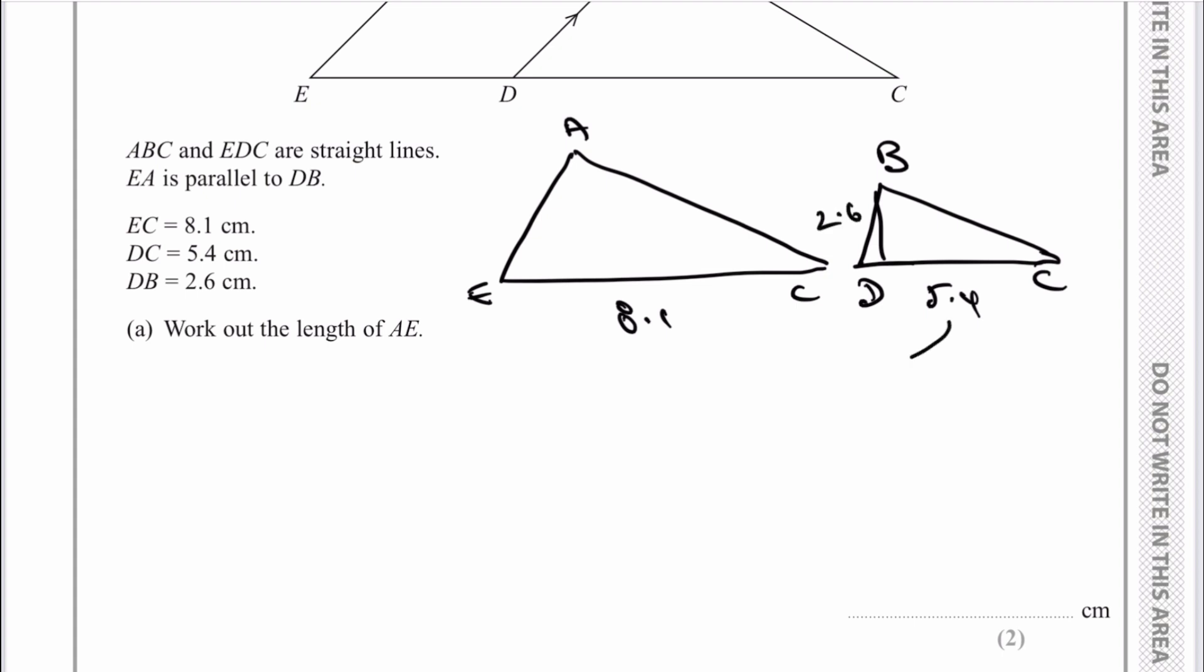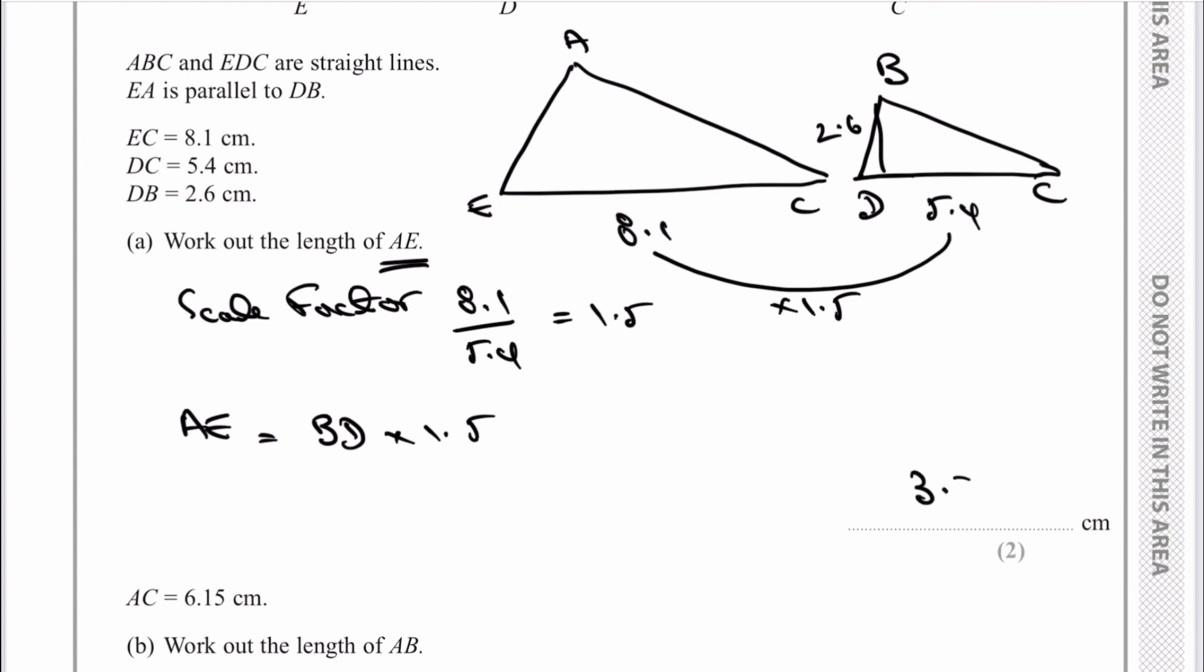That's good news because it will allow us to work out the scale factor. If we multiply 5.4 by something, what do we get? The scale factor is 8.1 ÷ 5.4, which is how many times we multiply 5.4 to get to 8.1, and it's actually 1.5. So that's the scale factor, which makes it relatively straightforward to work out the other sides. The length AE equals BD × 1.5, which gives us 3.9 centimeters.